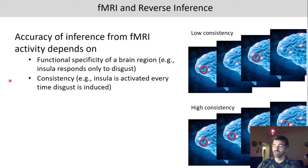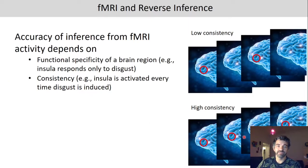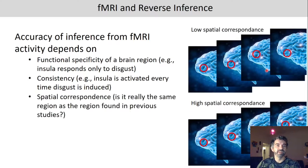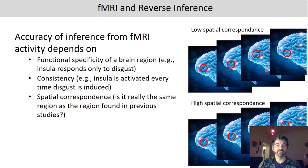Consistency is also important — the brain region should be activated every time the emotion is induced. High consistency means it's active every time; low consistency means it's only active some of the time. Spatial correspondence is also important: is it really the same region as in previous studies? For example, the amygdala has sub-parts, some more sensitive to negative emotions and others to positive emotions, so the level of spatial correspondence makes a real difference.